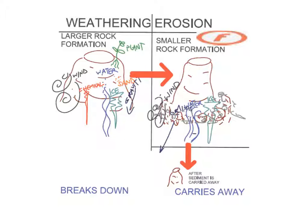A great example would be the hoodoos or the arches in Moab or Zion, where there used to be larger rock formations that are now these tiny little steeples. And here are some of the elements and forces that can cause erosion, which is different from weathering.